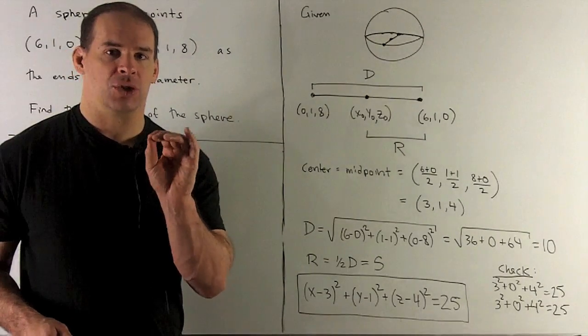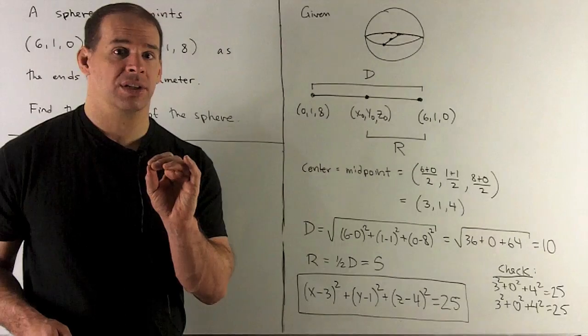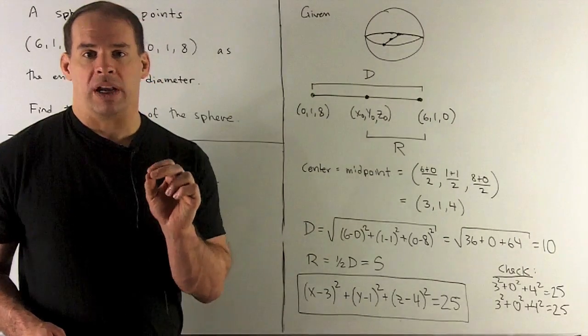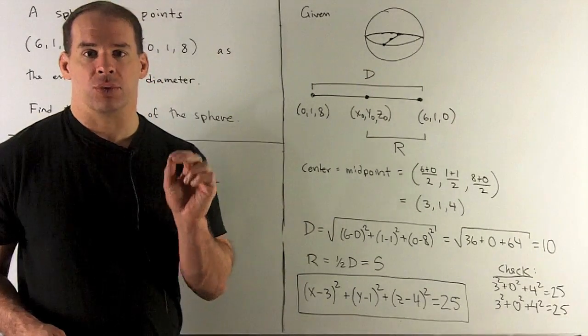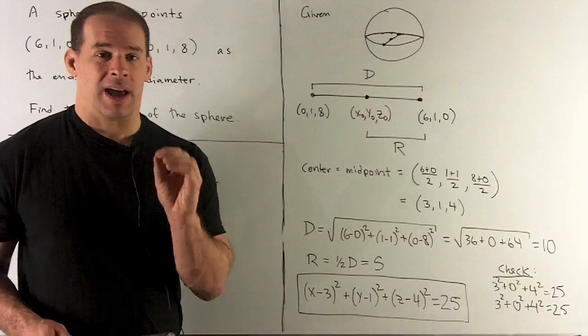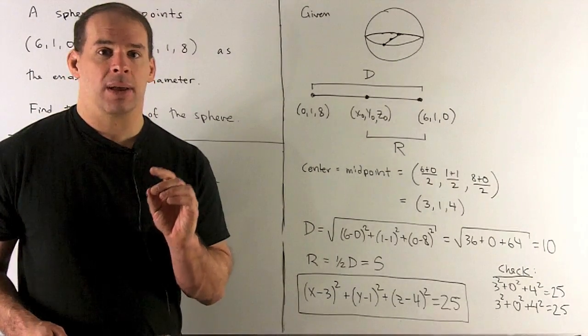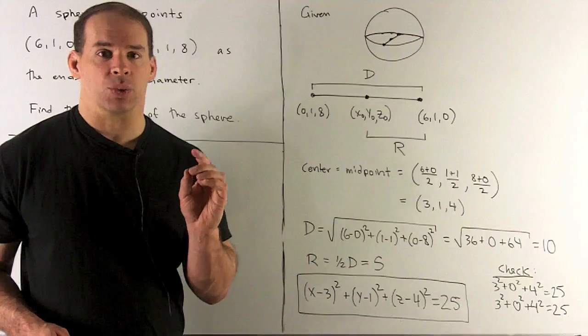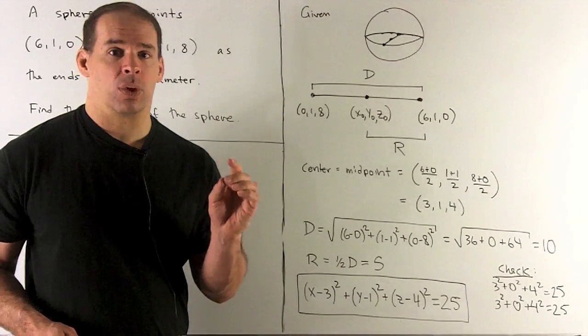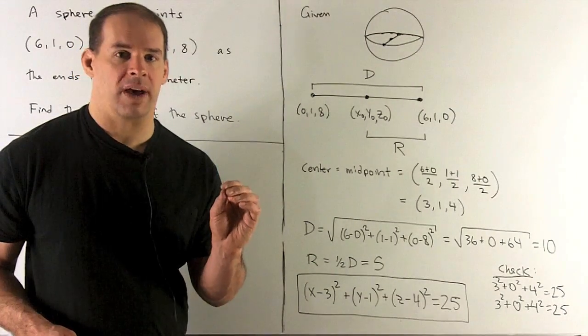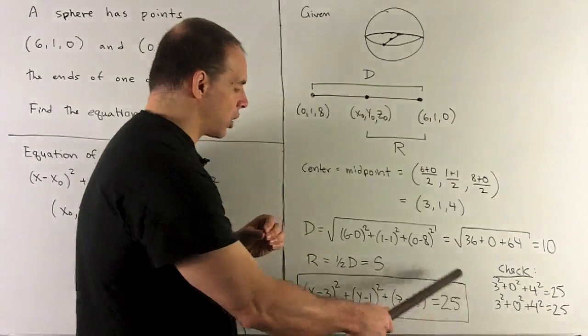So you need to be careful there to make sure you're not using that for your radius. Now, the radius, just one half of that, so the radius is 5. I have everything I need now to get my equation. So I'll have (x - 3)² + (y - 1)² + (z - 4)² = 25. So that's our solution.